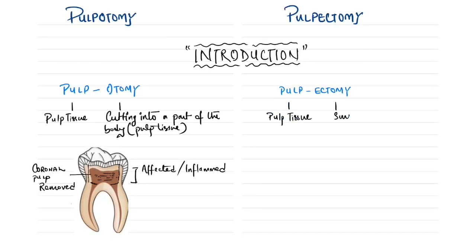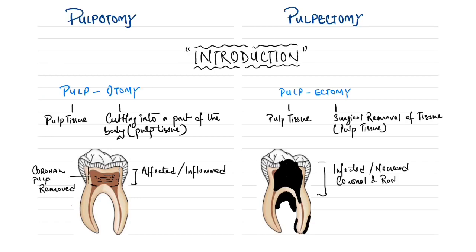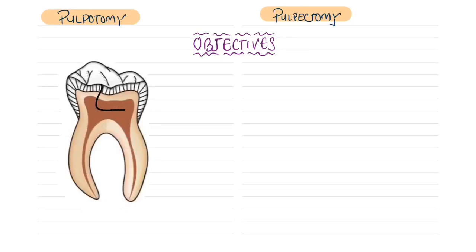In pulpectomy, 'ectomy' refers to the surgical removal of tissue — specifically the pulp tissue. When there is a carious exposure leading to inflammation or infection of the radicular pulp tissue, or necrosis of the radicular as well as coronal pulp tissue, we remove the entire pulp tissue from both the coronal and radicular regions. This is the pulpectomy.